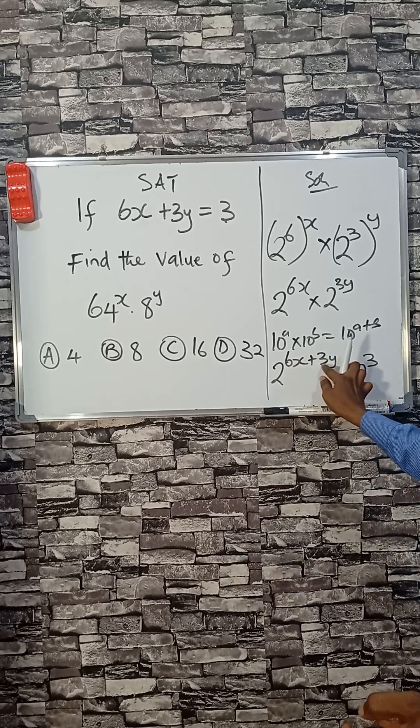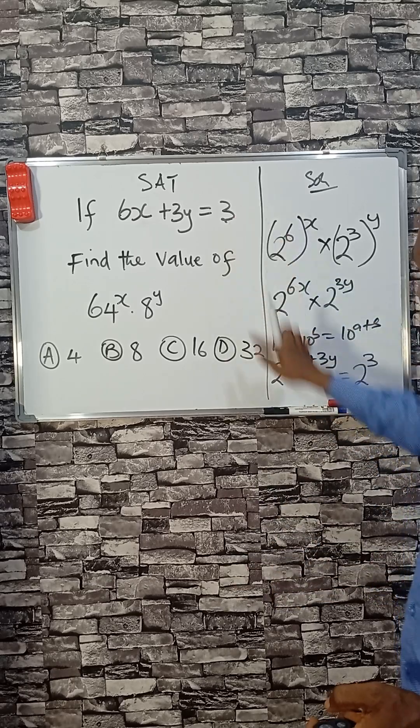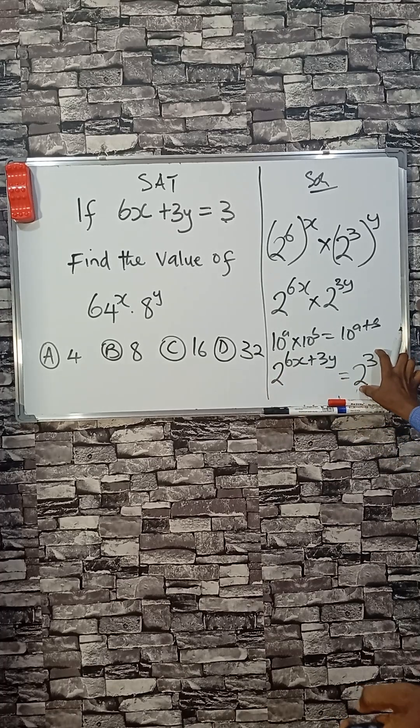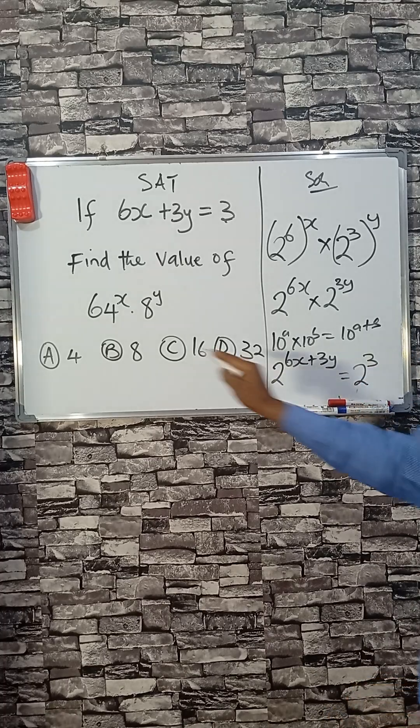Because 6x plus 3y is 3, 2 to the power 3—2 power 3 is 8. And that makes this the correct answer.